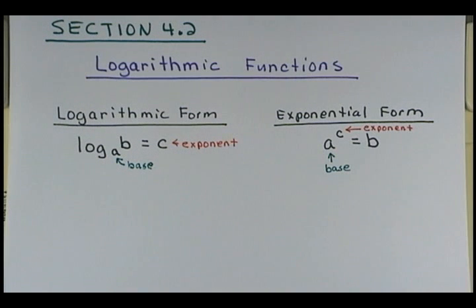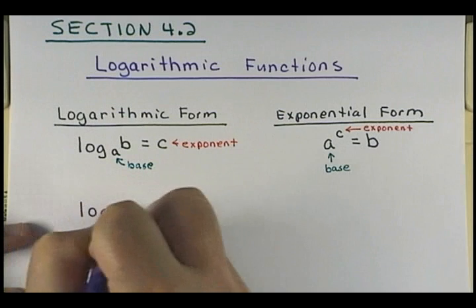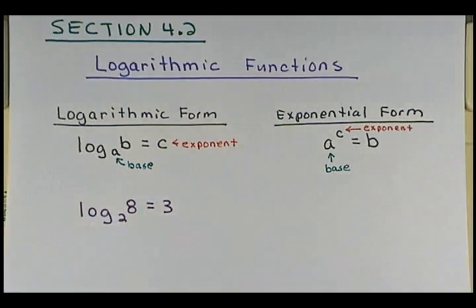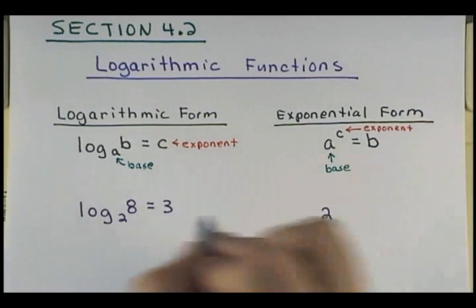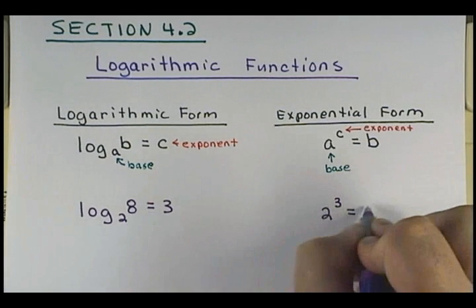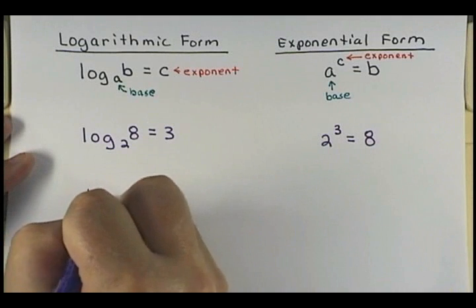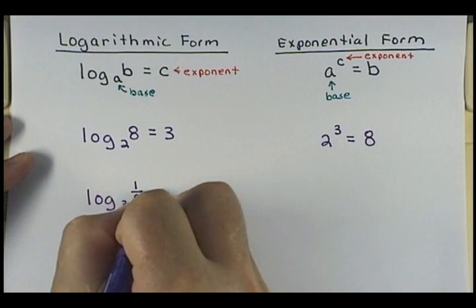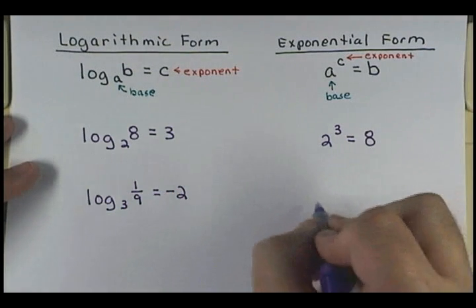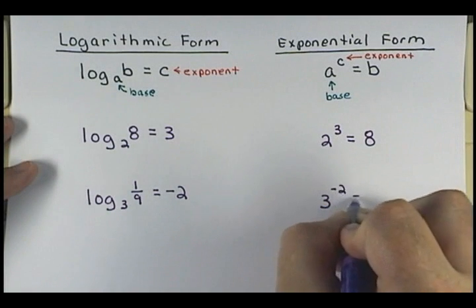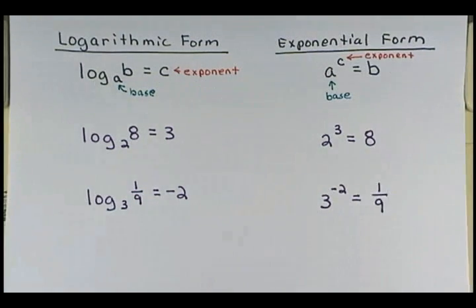For example, if I have the log of 8 to the base 2 equals 3 — how can I rewrite this in exponential form? What's your base? 2. To what power? 3. Equals what am I taking the log of? 8. So: 2 to the 3rd equals 8. And isn't that true? 2 cubed is 8. Next example: the log of 1/9 to the base 3 equals negative 2. So: 3 to the negative 2 equals 1/9.